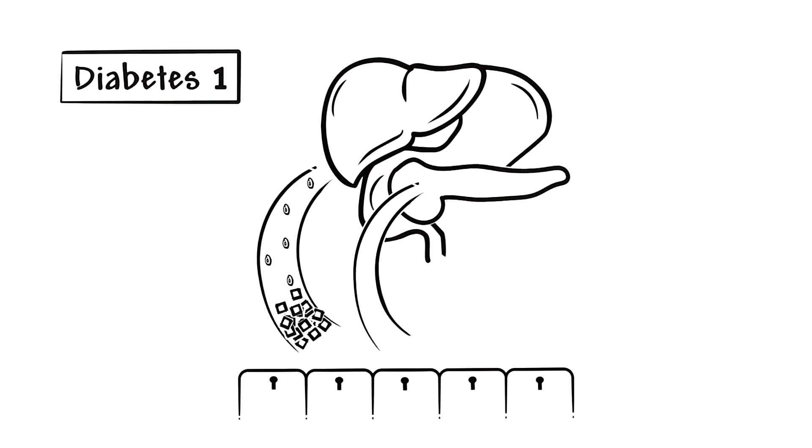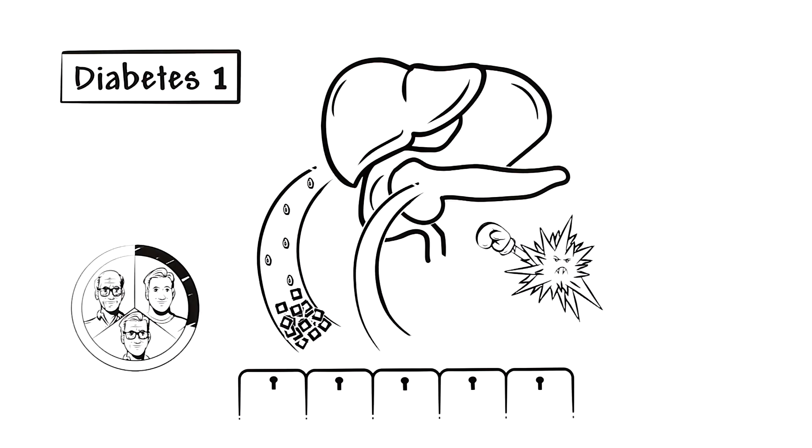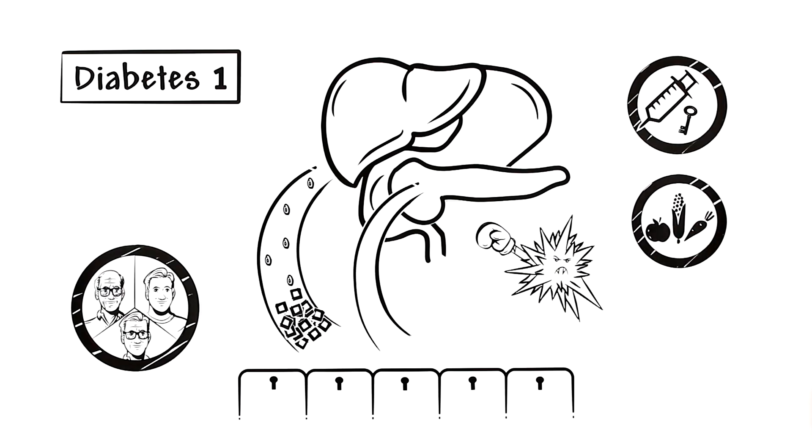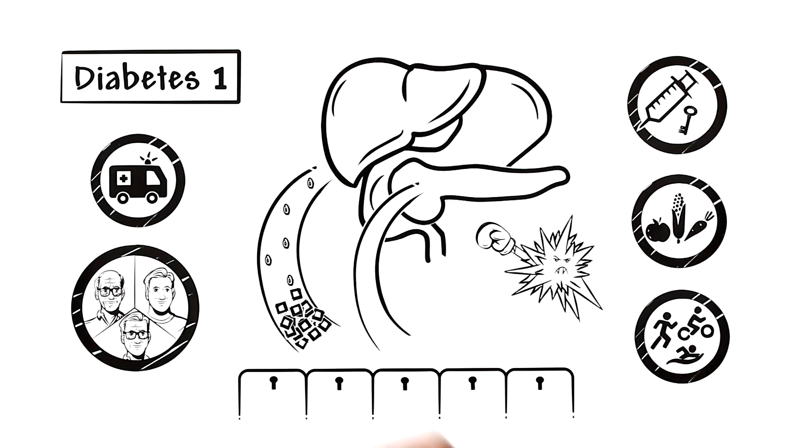In type 1 diabetes, the body's own defense cells attack the islet cells of the pancreas so that they can no longer produce insulin. This form of diabetes usually develops in adolescents. These patients have to take insulin shots for the rest of their lives and make sure to live a healthy lifestyle to avoid damaging their bodies.